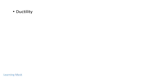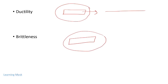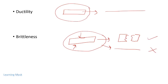The next property is ductility. If a material can be changed into a wire by application of force, that property is called ductility. The next property is brittleness: if a material breaks under applied force or pressure and cannot be changed into wire form, it is called a brittle material. An example of a brittle material is glass, and examples of ductile materials are gold and copper wire.